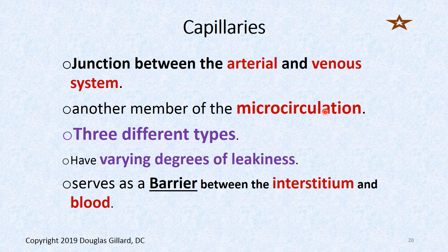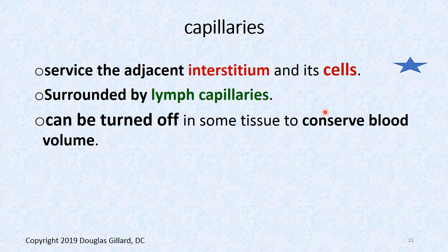Capillaries are in between the arterial and venous systems, specifically between arterioles and venules — they are the other member of the microcirculation. There are three different types with various degrees of leakiness depending on type. They serve as a barrier between the interstitium and the blood. Oxygen leaves at the proximal capillary; CO₂ returns via the distal capillary. They're also surrounded by lymph capillaries, which are blind-ended tubes.